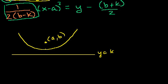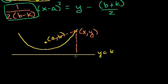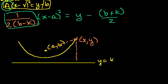We took an arbitrary (x, y) in the coordinate plane and said that (x, y) has to satisfy the condition that its distance to the focus is equal to its distance to the directrix. We set that up using the distance formula and then did a bunch of algebra to get this equation for all points equidistant to the focus and this line. And we satisfied ourselves that this is in fact a parabola.